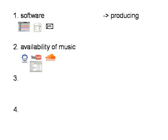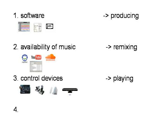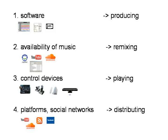There's a big difference to the world 15 years ago. Imagine a world without the web, without email, without mobile phones. I've chosen four points where I want to focus on how new technology had consequences in music: first, software — the area of producing music; then the availability of already existing music — remixing; then the existence of control devices — playing music; and platforms and social networks for distributing music.